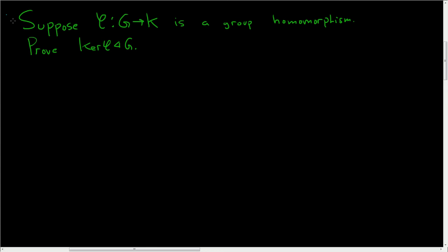Suppose phi from G to K is a group homomorphism. We want to prove that the kernel of phi is a normal subgroup of G.